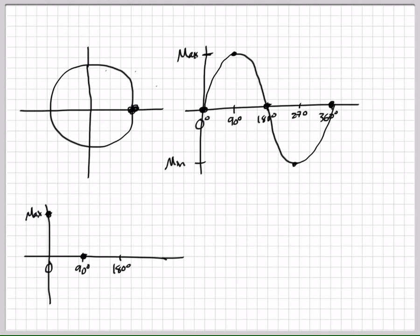Our next quadrantal angle, we have 180 degrees, and now we're at the minimum. Good job, minimum. This is where we have another co-height, and that's the minimum because it's still the farthest distance, but now it's a negative distance.